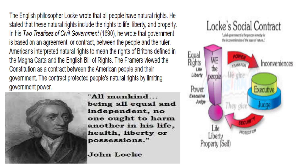Question seven: John Locke wrote that all people have three natural rights. What were those three natural rights? Life, liberty, and property. Of course, we know that Thomas Jefferson amended those and said 'pursuit of happiness' instead of property. Question eight: What did John Locke say that government should be? He said government should be a contract or agreement between the people and the ruler. Question nine: How did the framers view the Constitution? They saw it, just like that, as a contract between the American people and the government.